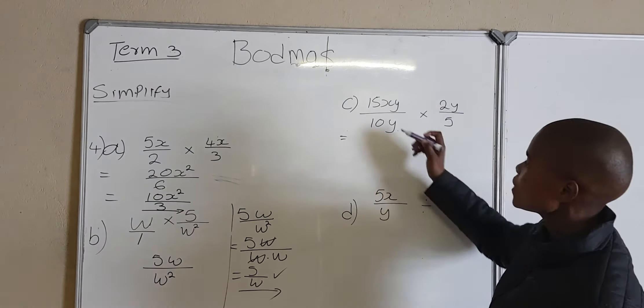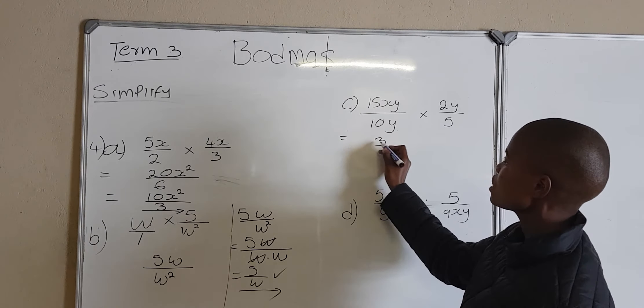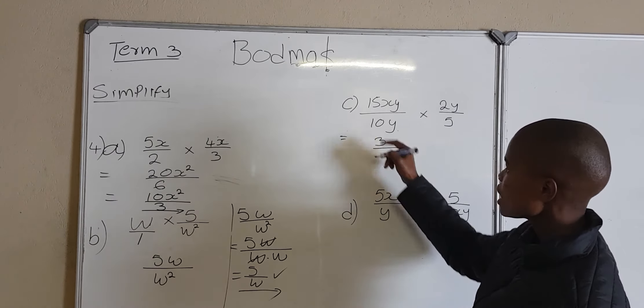What is the highest common factor of 15 and 10? It will be 5. The highest common factor is the number that is divisible by both. So 5 goes into 15 three times, and into 10 two times. Simplifying before you do the multiplication makes your life easy. There is no x at the denominator side, but I've got y and y — so this y will divide that one, meaning I no longer have a y.